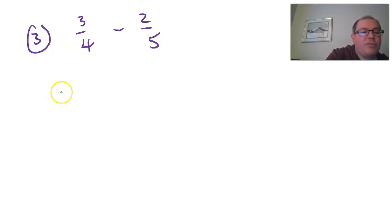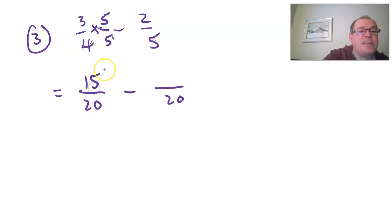Okay, so looking at three quarters minus two fifths, what's the smallest number you can think of that four and five both go into? And I thought of 20. So how many times does four go into 20? Five times. So I want to multiply the bottom by five. Four times five is 20. So I have to multiply the top by five as well. And I get 15 twentieths.